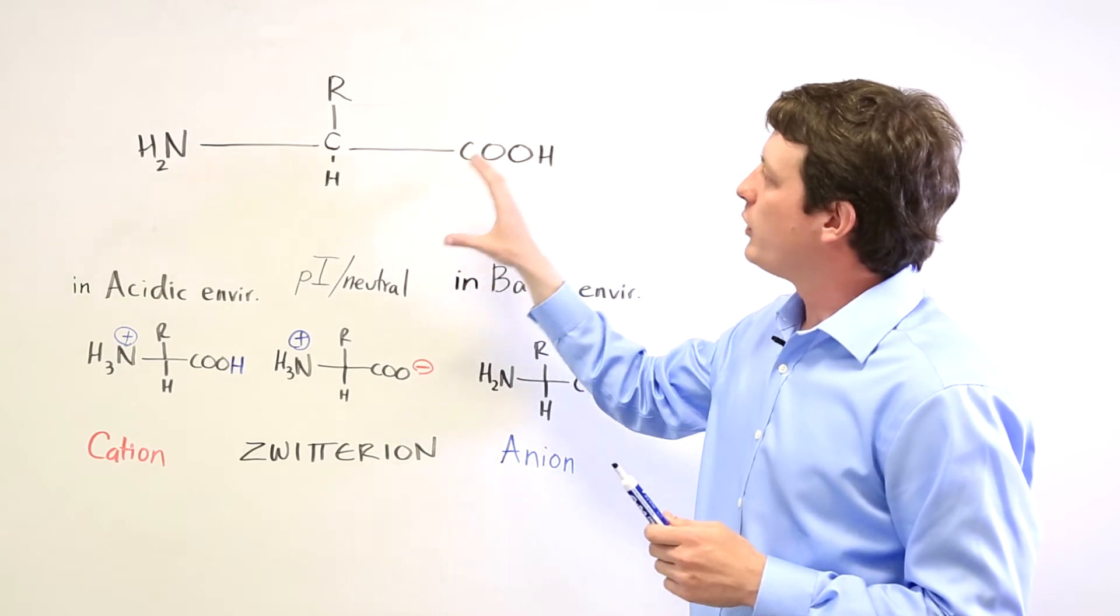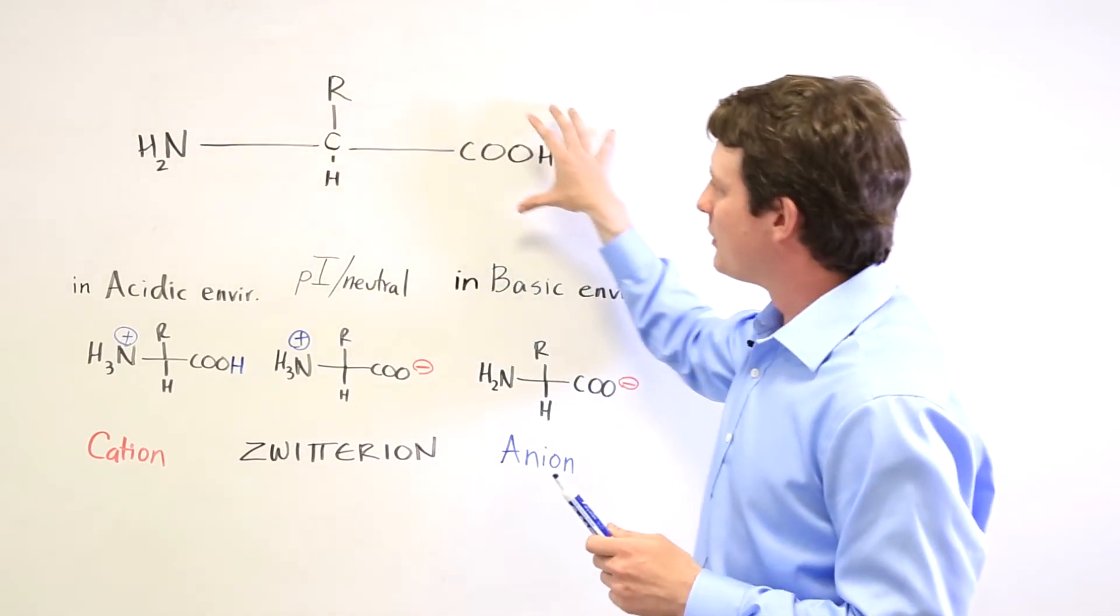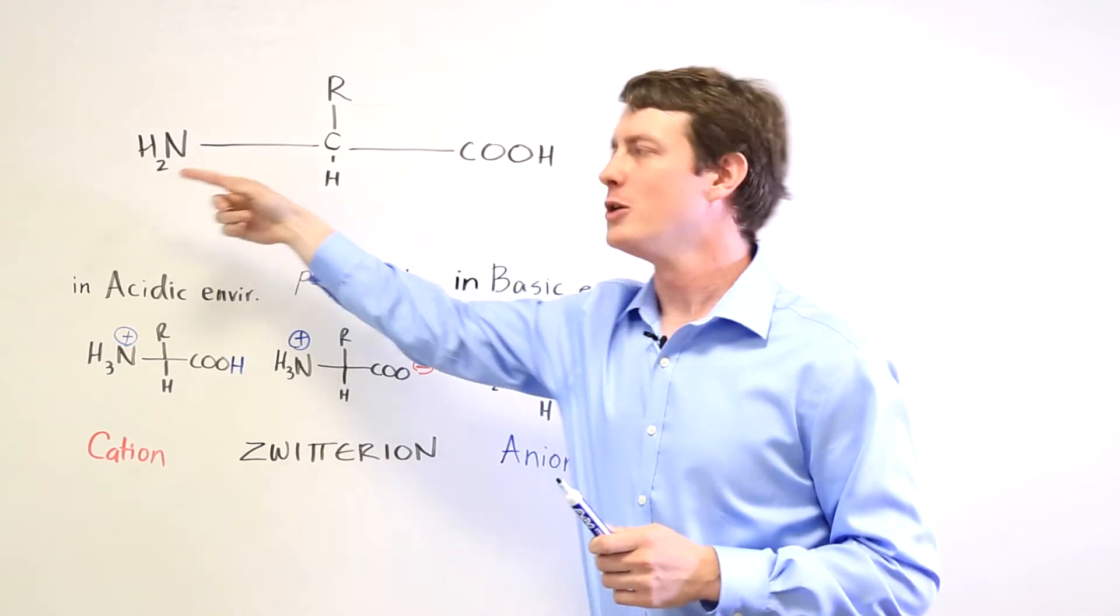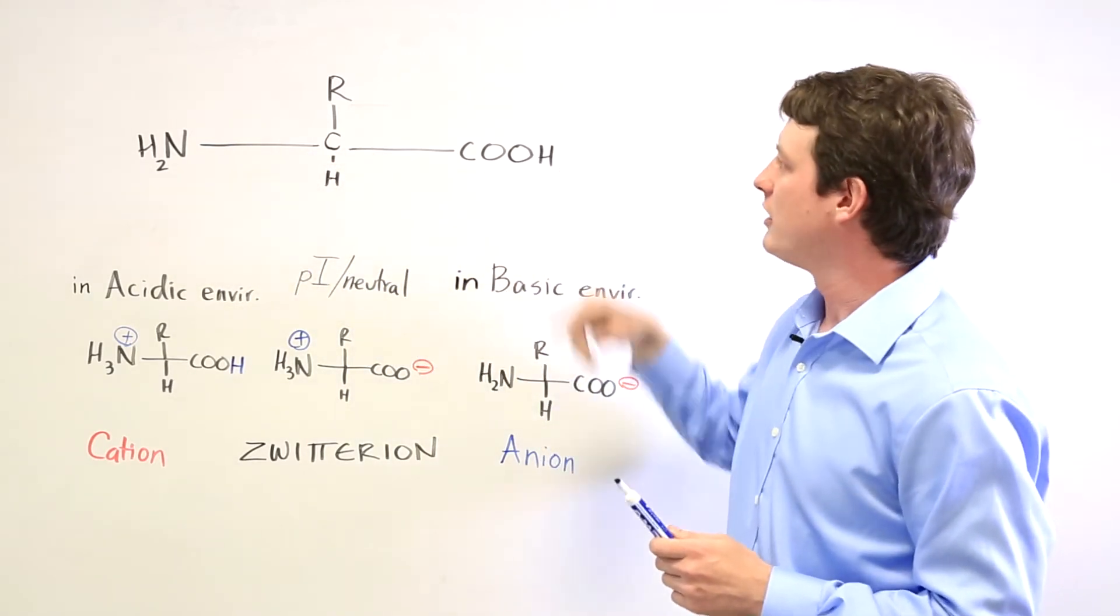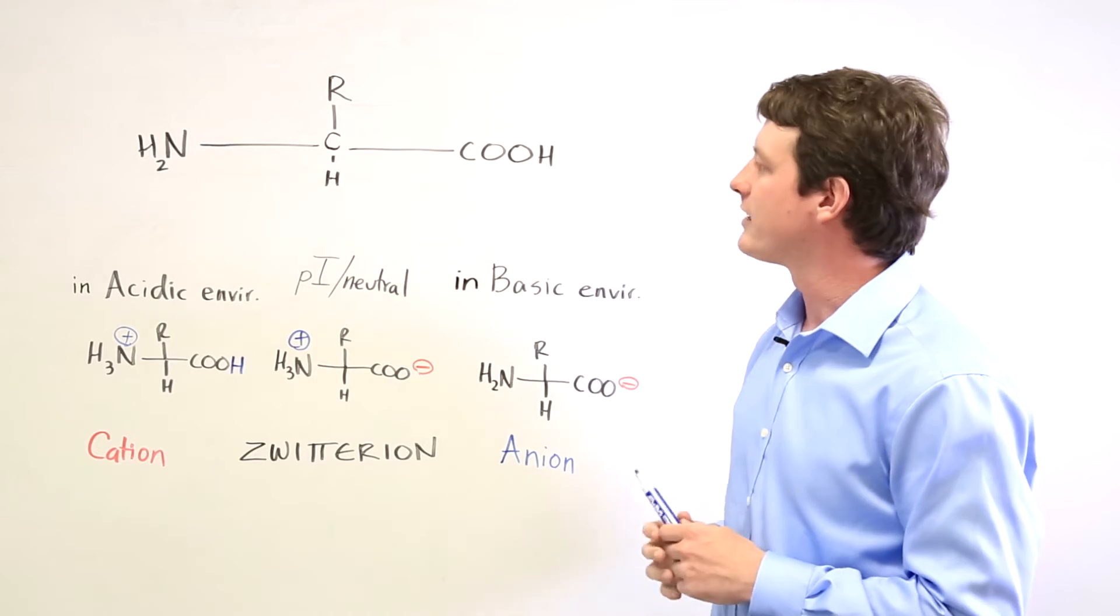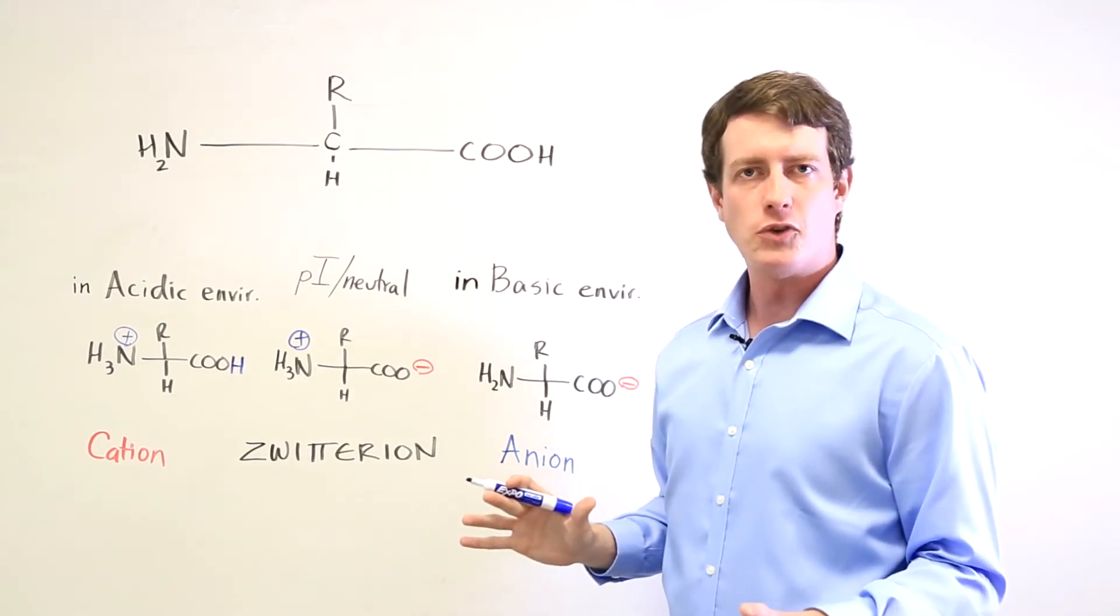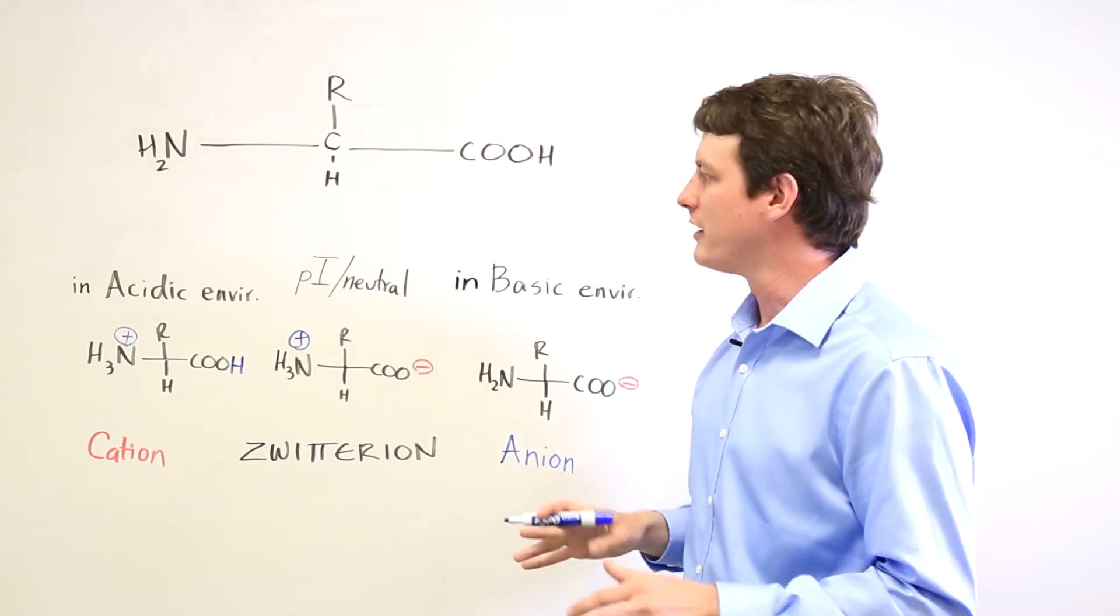Another interesting thing is that we usually like to draw amino acids with this particular structure with an H2N group over here on the amino group and a COOH on the carboxylic acid group. In reality they never actually exist in this form. They're always charged in one way or another.